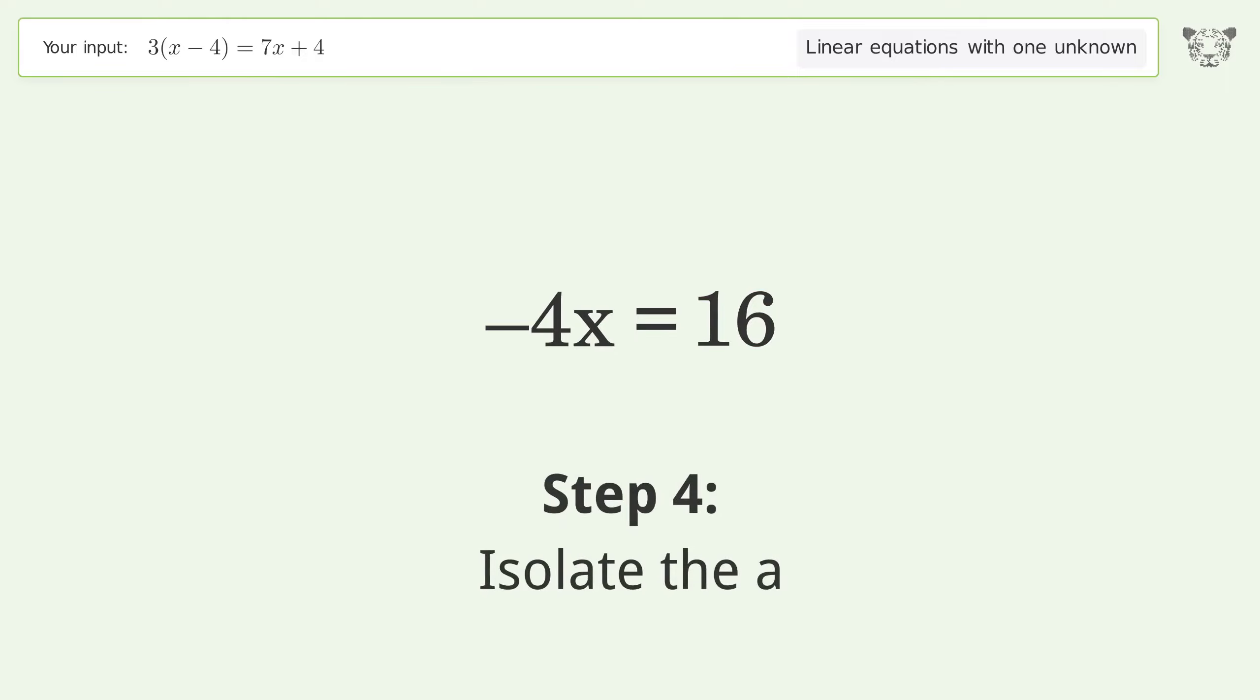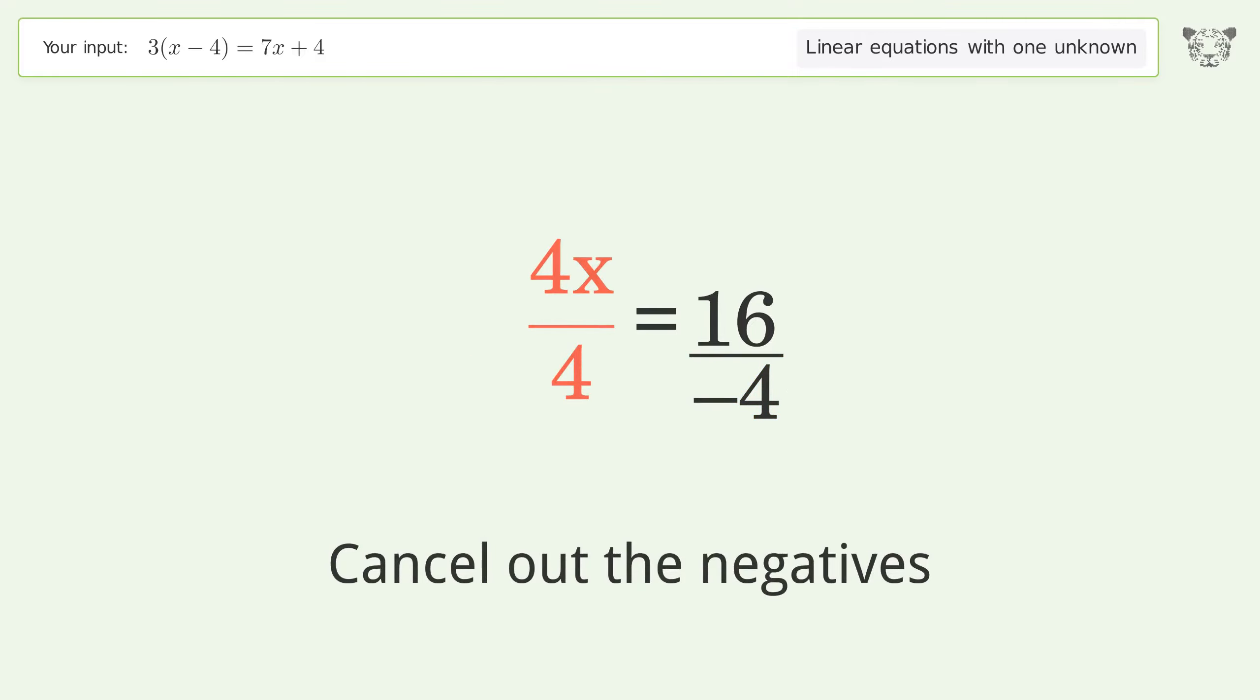Isolate the x by dividing both sides by negative 4. Cancel out the negatives and simplify the fraction.